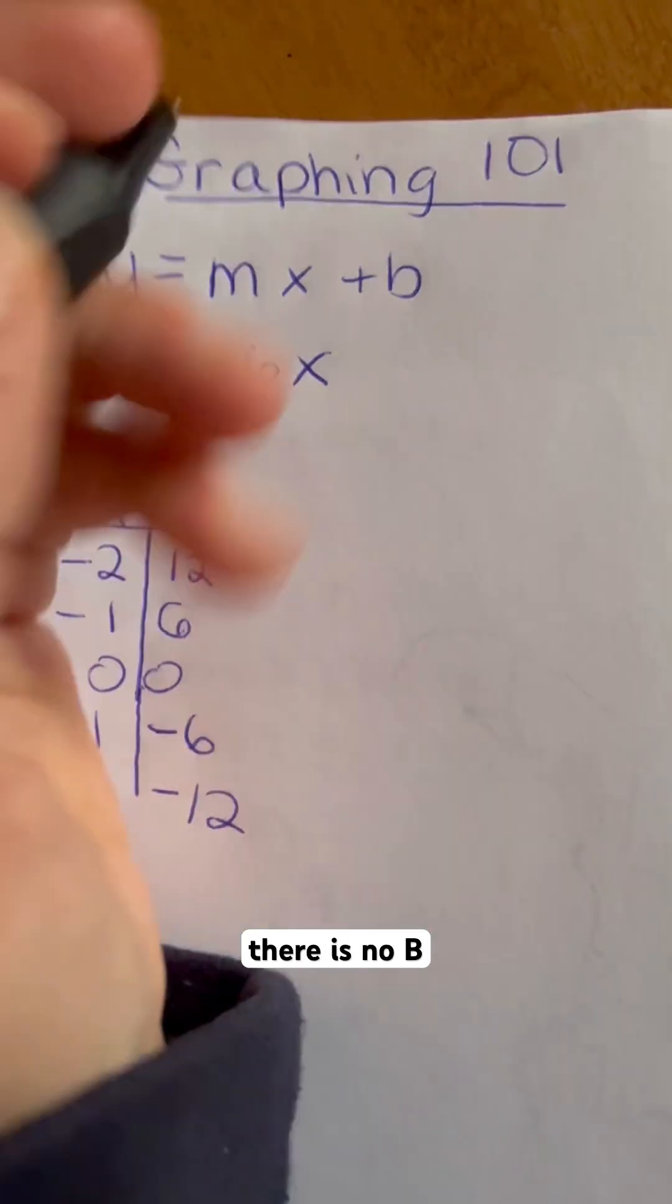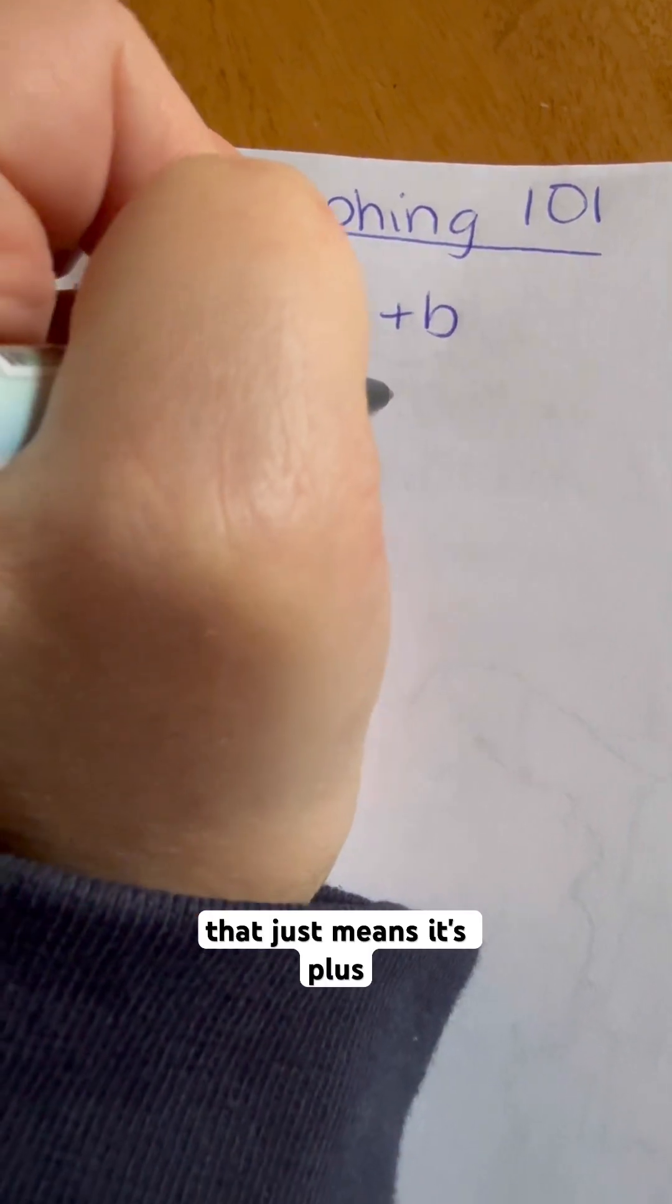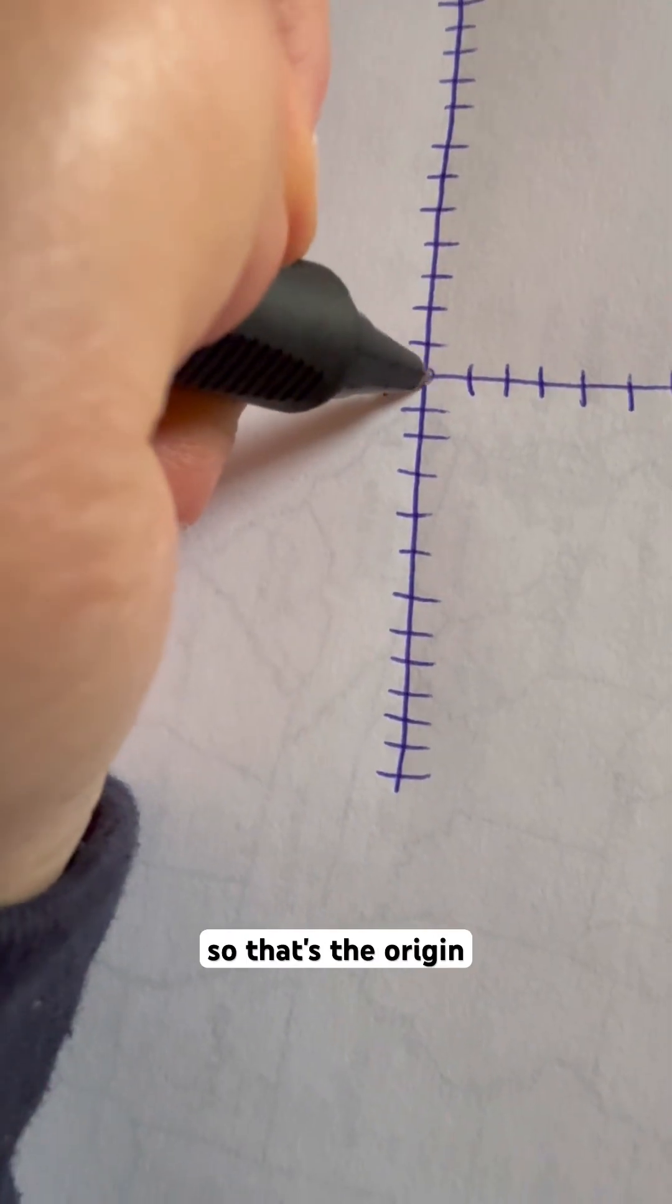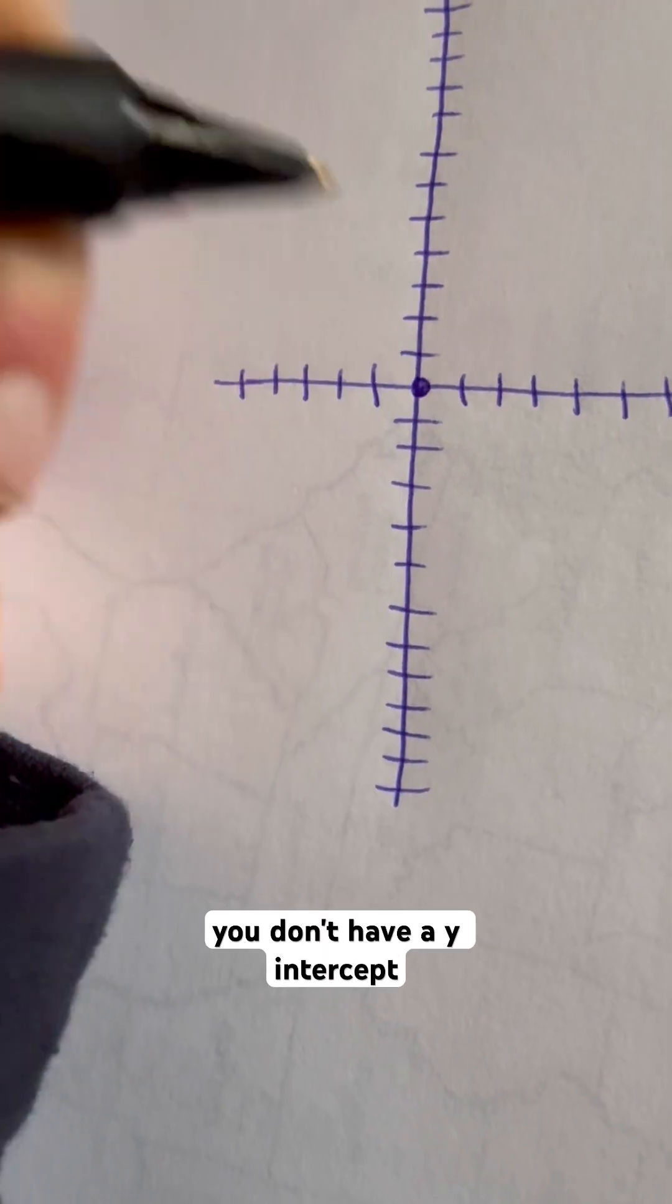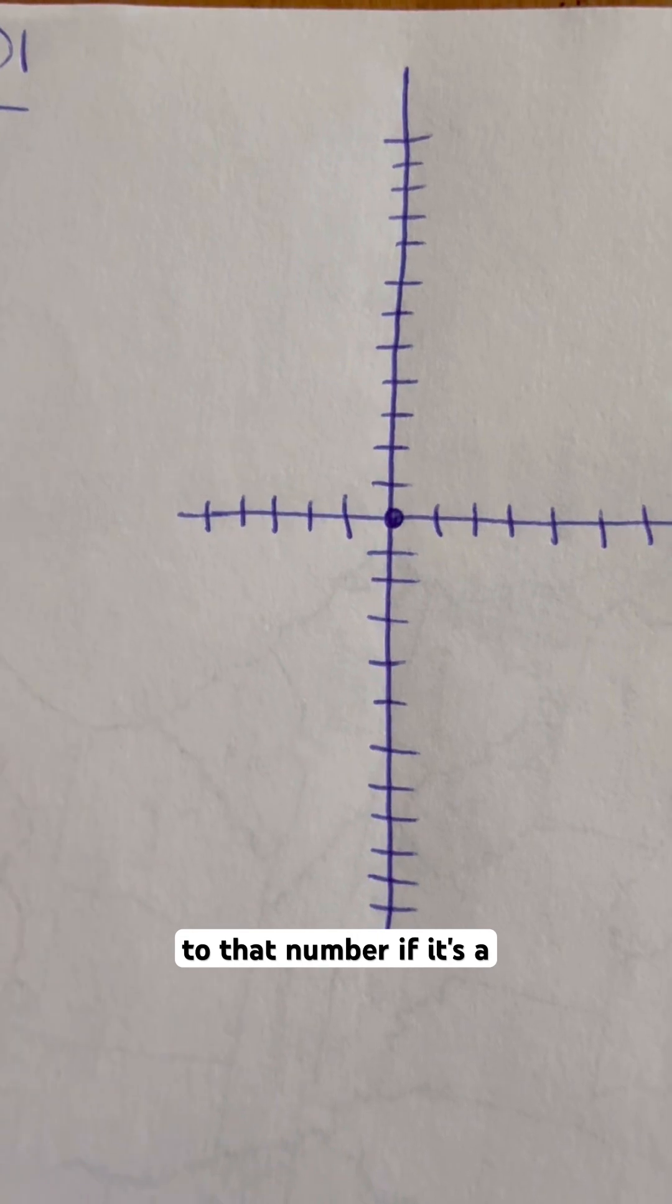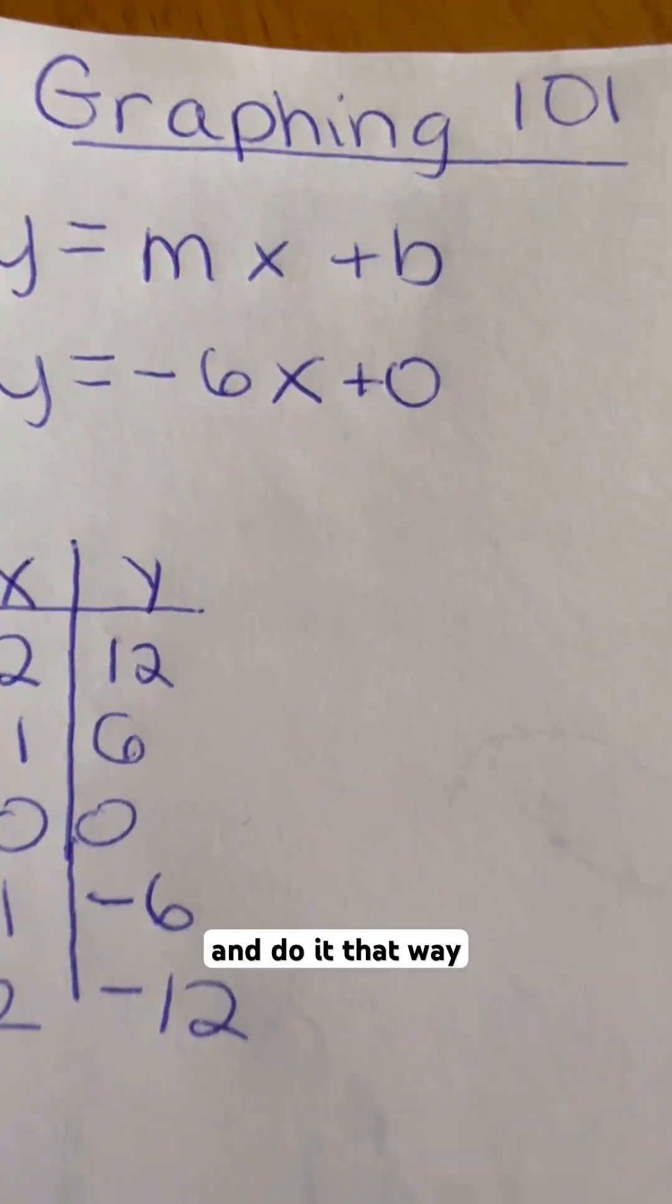So there is no b here. Anytime there's no b, that just means it's plus 0 basically. So we're going to start by graphing at 0. That's the origin anytime you don't have a y-intercept. If there's a plus number, you would go up on the y-axis to that number. If it's a minus number, you go down on that graph.